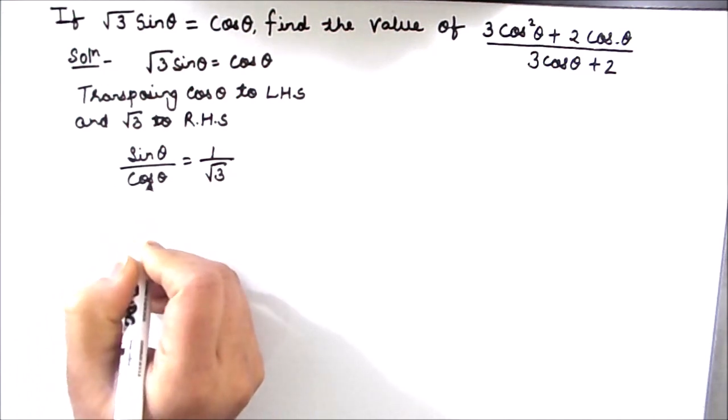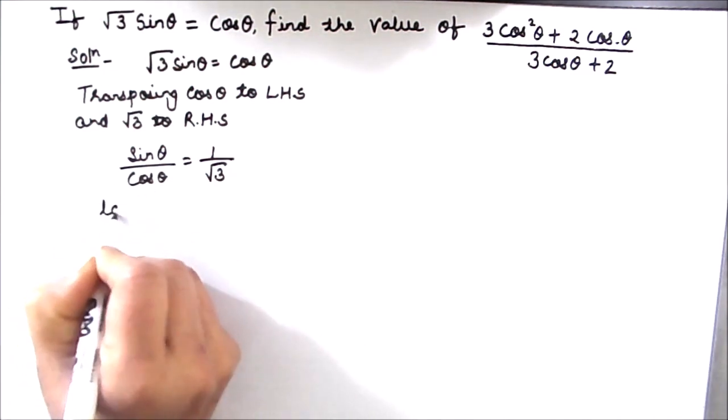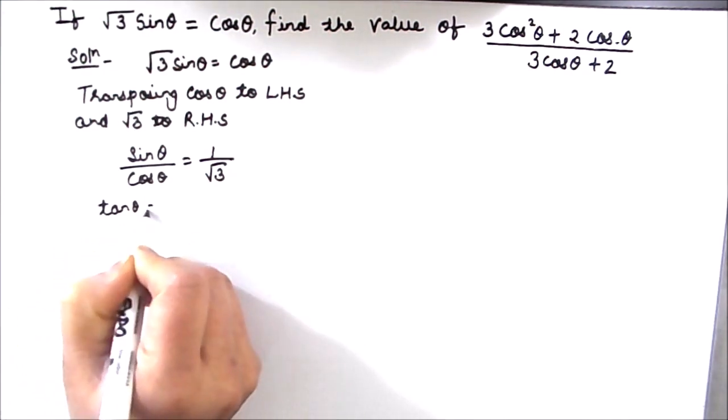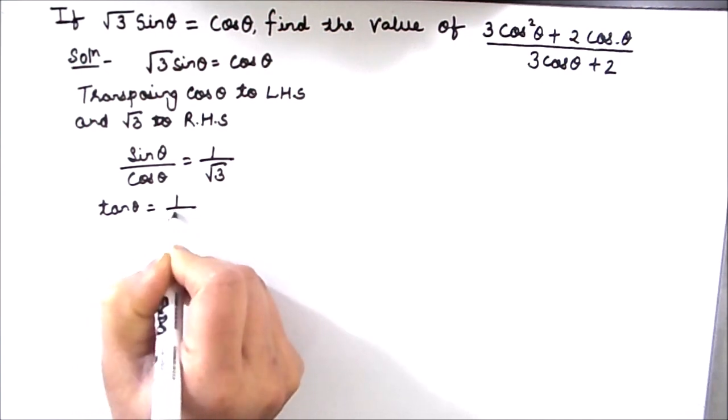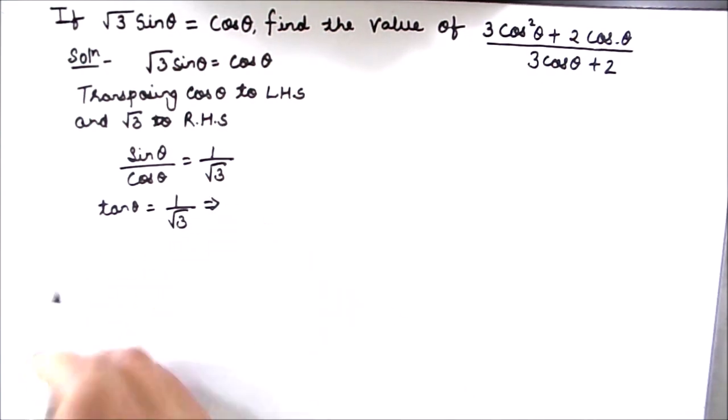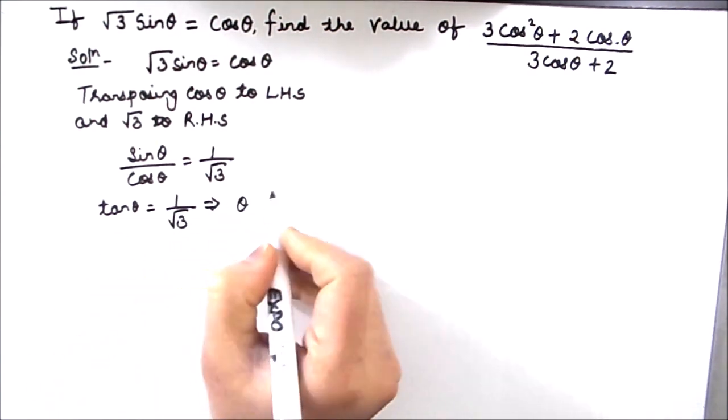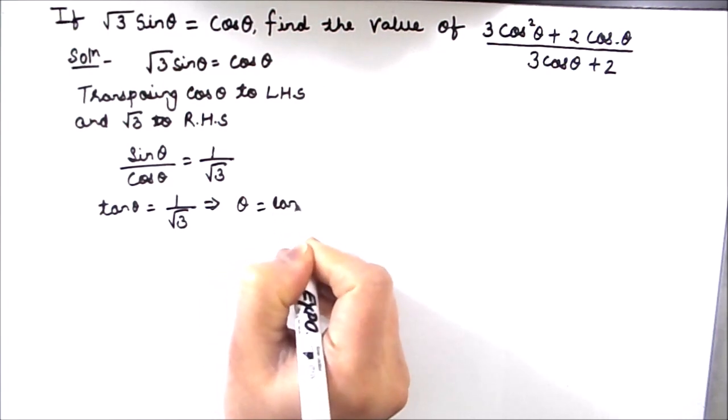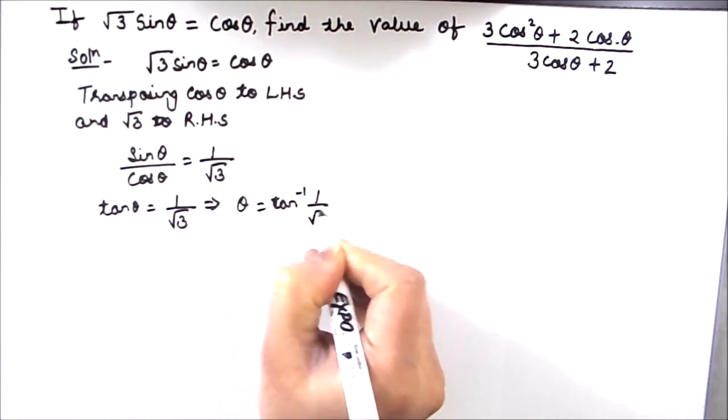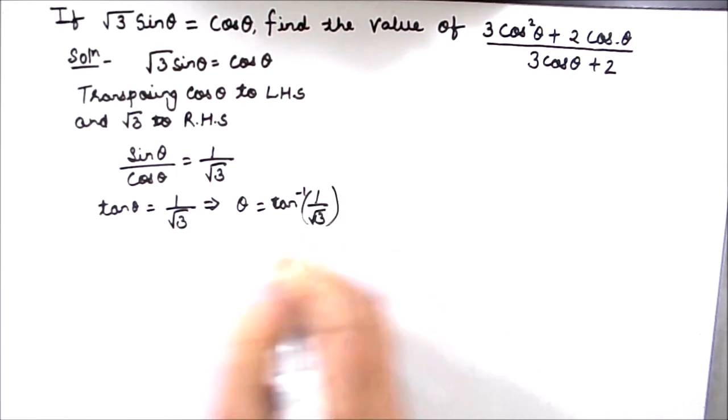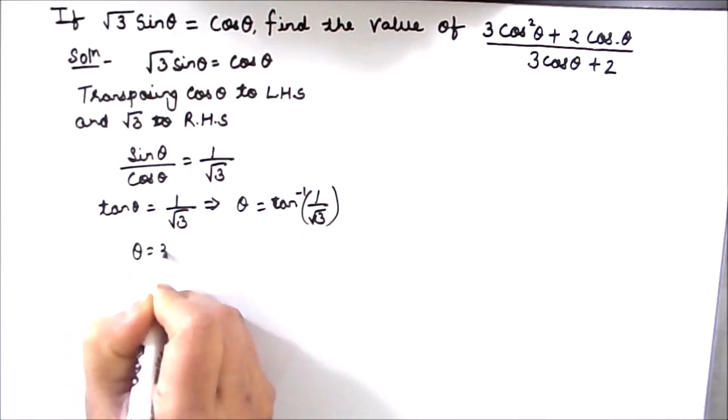Now sin theta divided by cos theta is tan theta. So tan theta is equal to 1 by root 3. From this we can find out the value of theta as tan inverse of 1 by root 3 which is equal to 30 degrees.